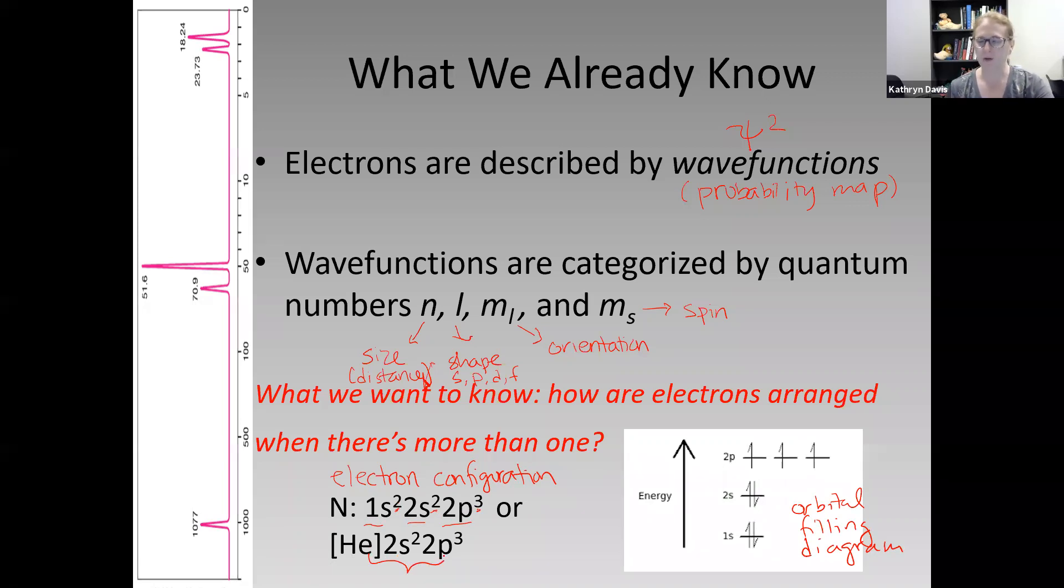The other way that we can do it is to draw the orbitals as lines. So these are single orbitals, and then every arrow, these little half arrows, are electrons.